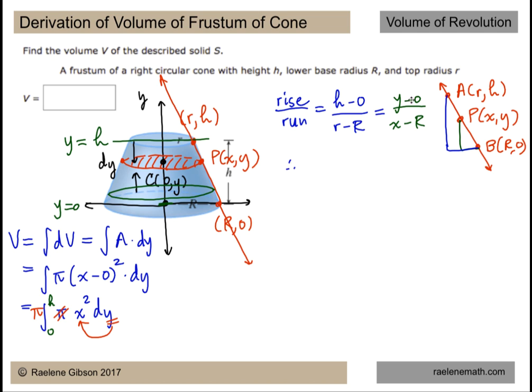If we do this we get y minus zero or y is equal to the slope h over r minus R times x minus R which of course is the same as the point slope form y minus zero here and x minus R here.